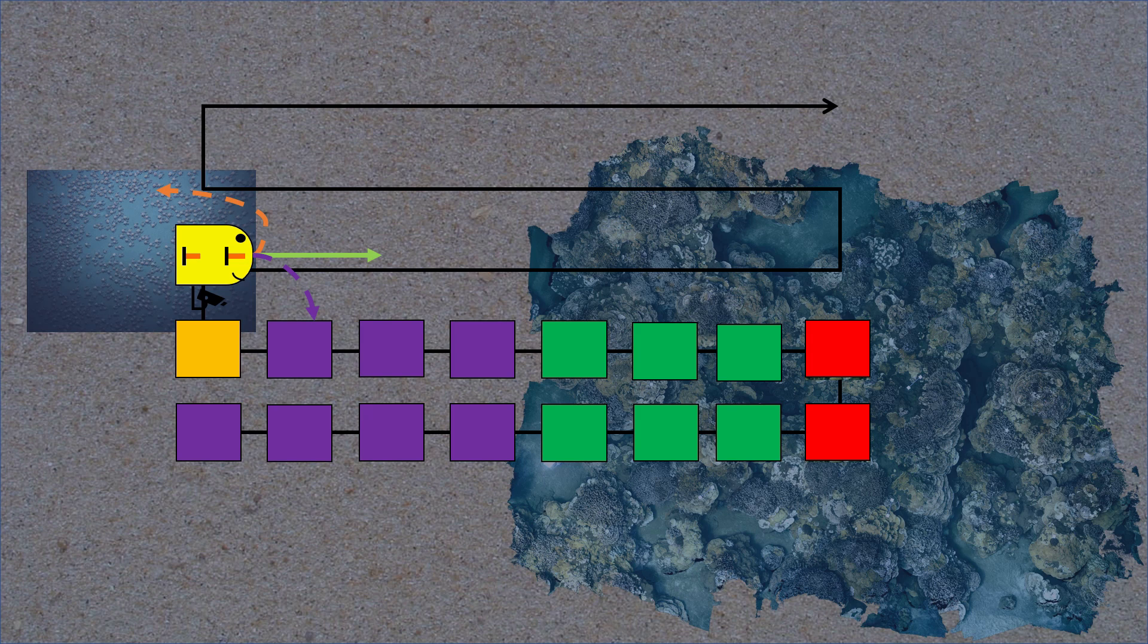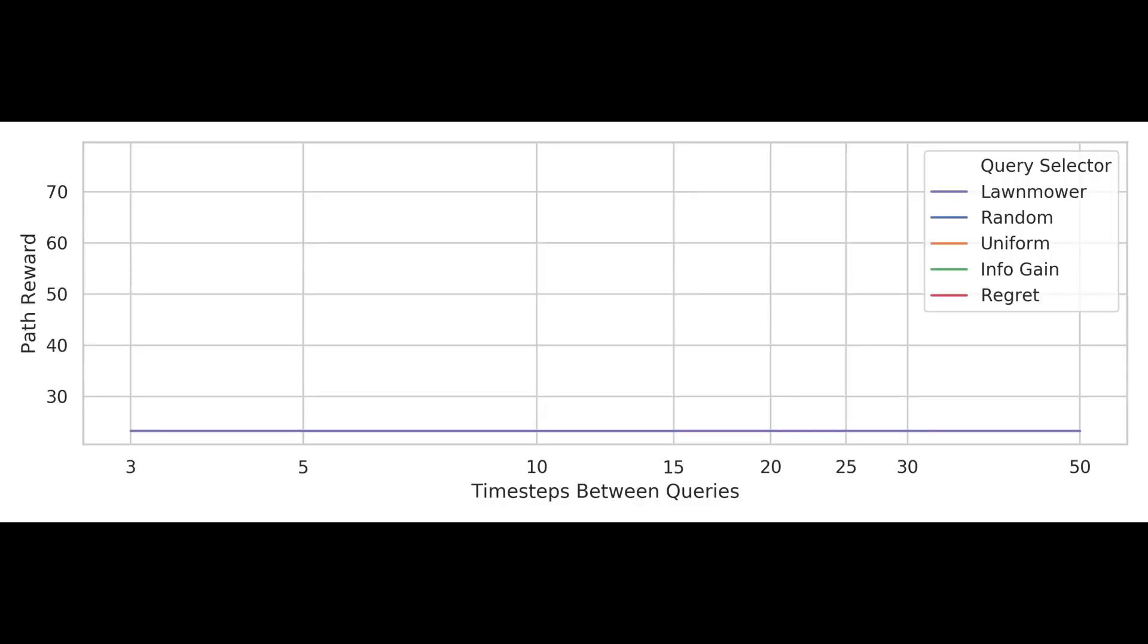As a baseline, let's see the amount of reward collected by following a pre-planned lawnmower trajectory like this one. The x-axis values are different communication bandwidths, so a 20, for example, means that the robot can only send back 1 in every 20 observations.